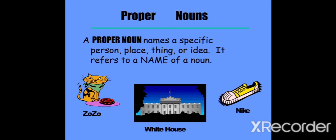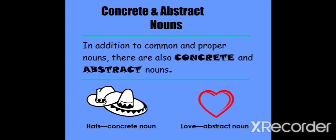Remember, a proper noun always begins with a capital letter. Keep in mind — a proper noun always begins with a capital letter. Now let us further go for some more kinds of nouns — that is, concrete and abstract nouns.